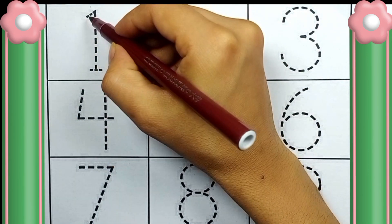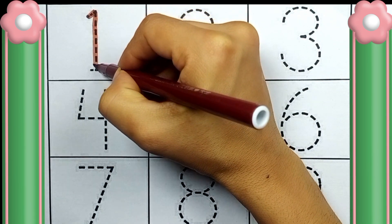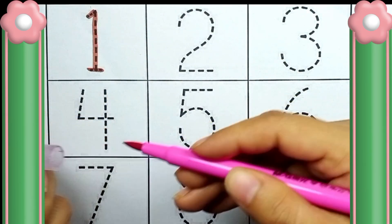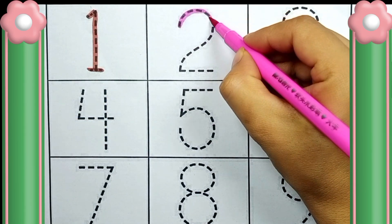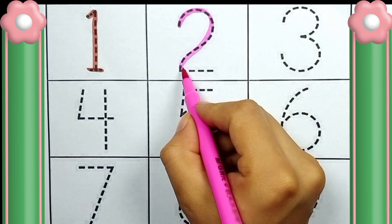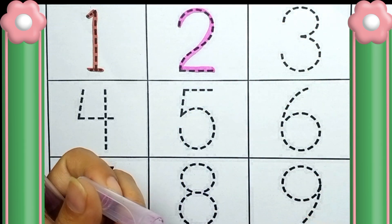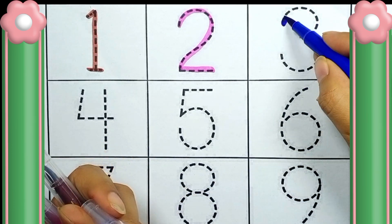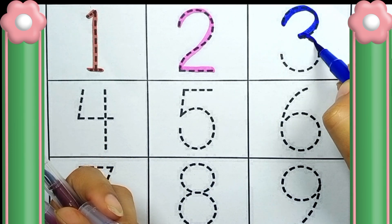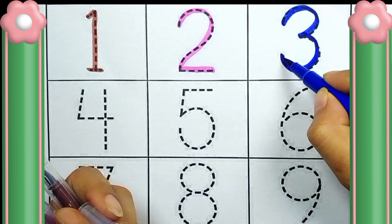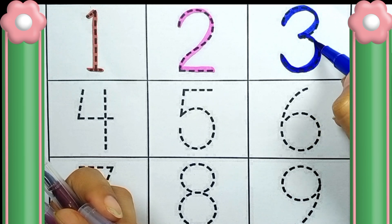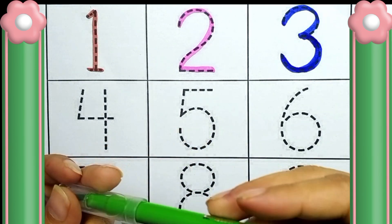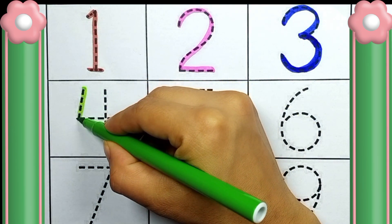Brown color, one. Pink color, two. Blue color, three. Green color, four.